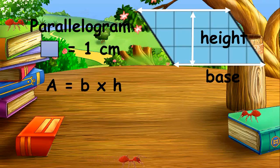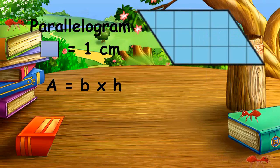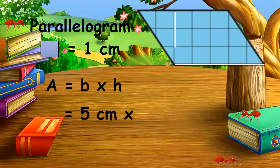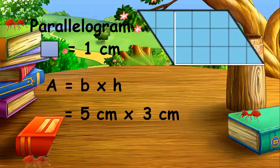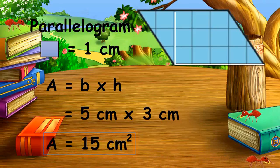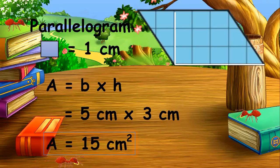Let us assume that the length of the side of each square unit is 1 centimeter. The base is 1, 2, 3, 4, 5 — that's 5 centimeters. The height is 1, 2, 3 — that's 3 centimeters. So 5 centimeters times 3 centimeters equals 15 square centimeters. Therefore, the area of the parallelogram is 15 square centimeters.